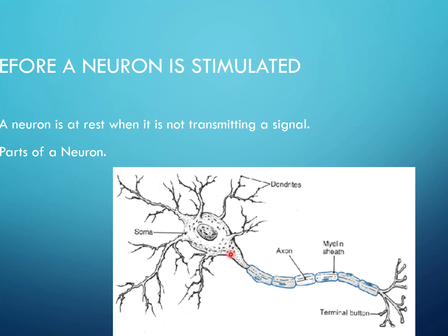The action potential will pass down the axon to the axon terminal. At the terminal, the action potential will jump across to an interneuron, which will then pass that signal on to the brain. The myelin sheath is fatty material that surrounds the axon in some neurons, and it increases the speed of the action potential moving down the neuron, thus increasing the speed at which we can sense things.